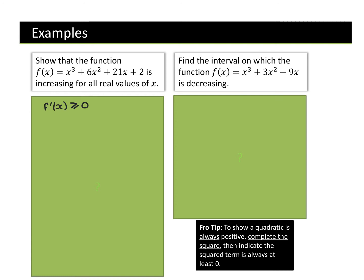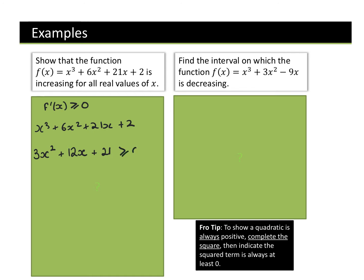So if we want to know the differential of this — because we know this is the notation for differentiate, and the gradient function is to differentiate — we differentiate x³ + 6x² + 21x + 2. Bring the power down and decrease the power by 1: 3x² + 12x + 21. We have to show that this is greater than or equal to zero.